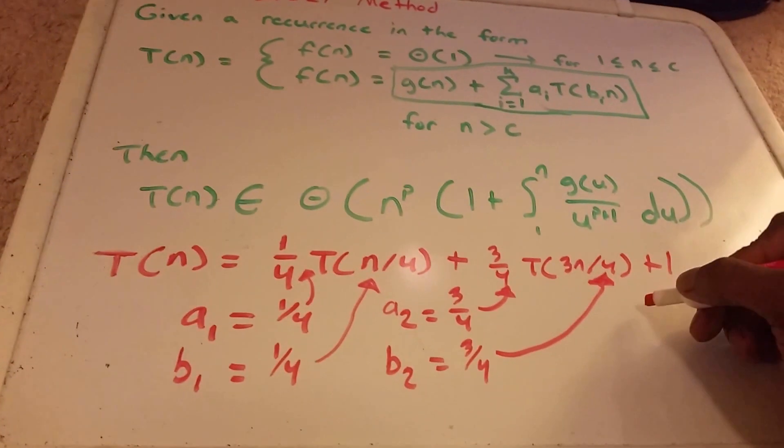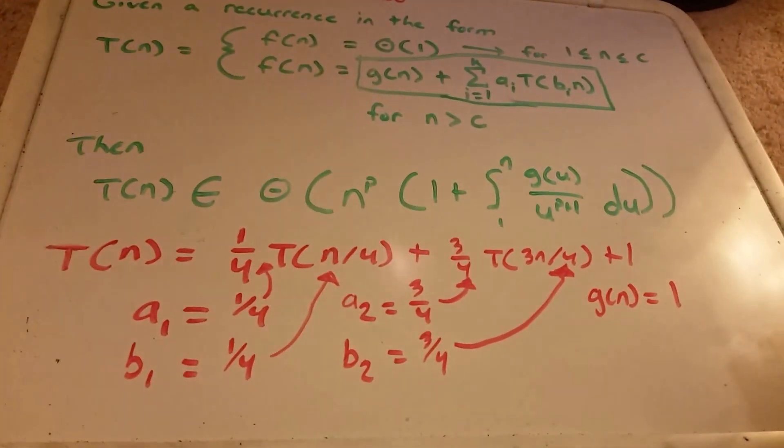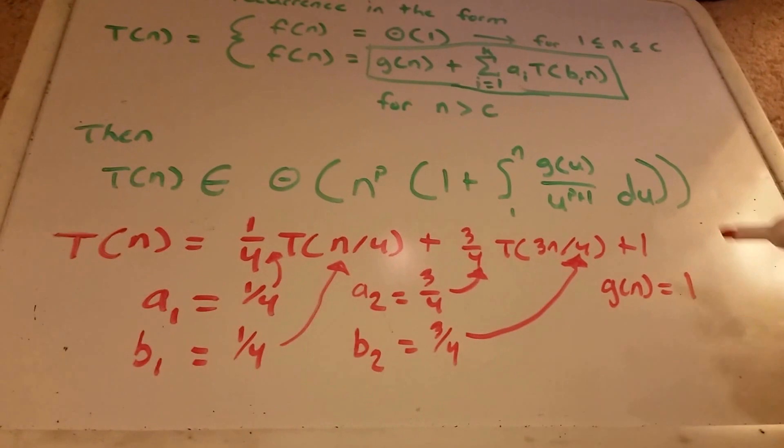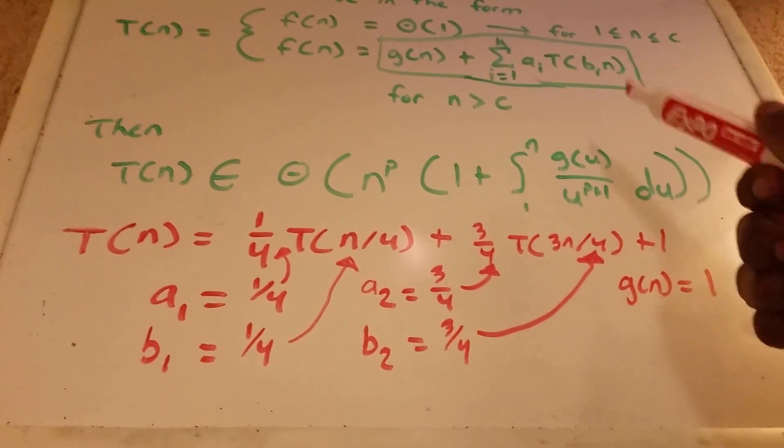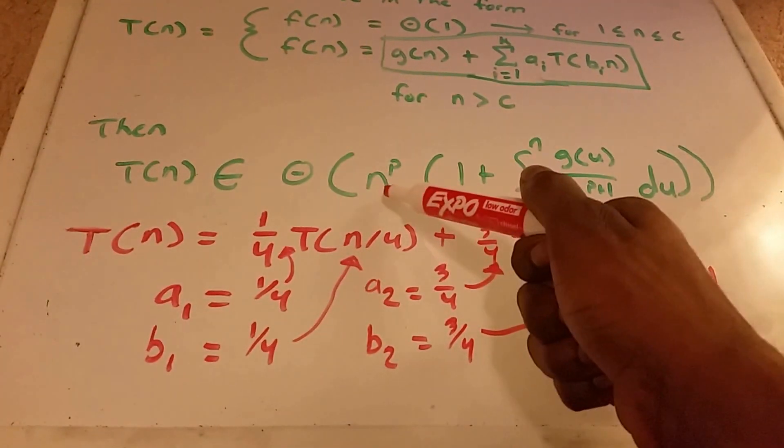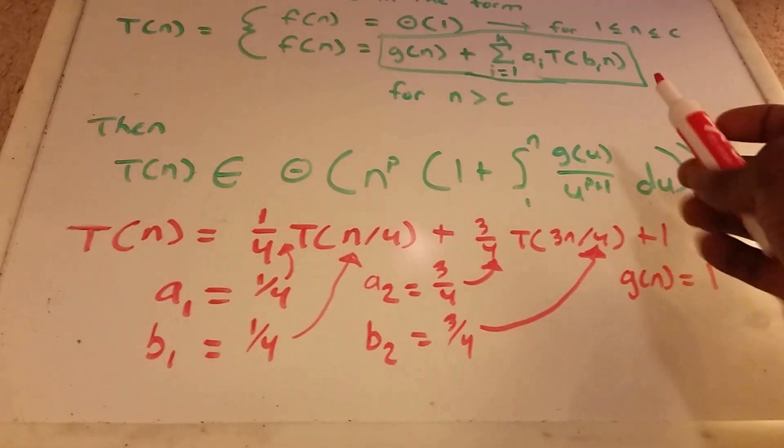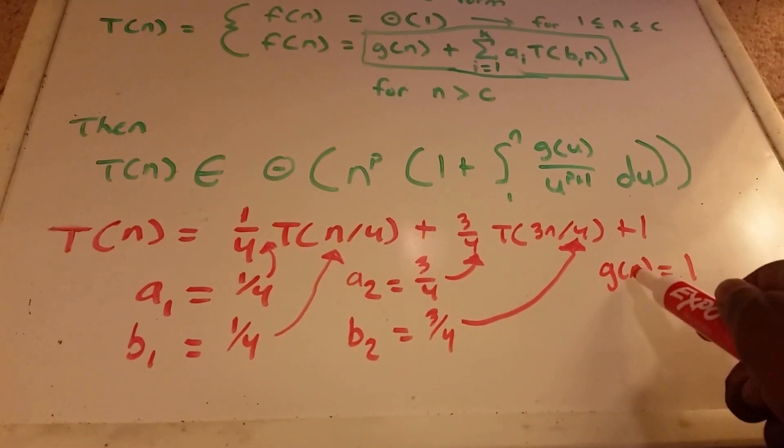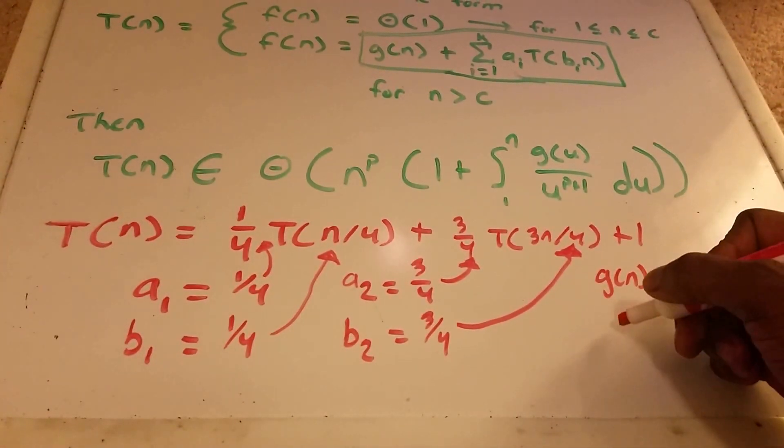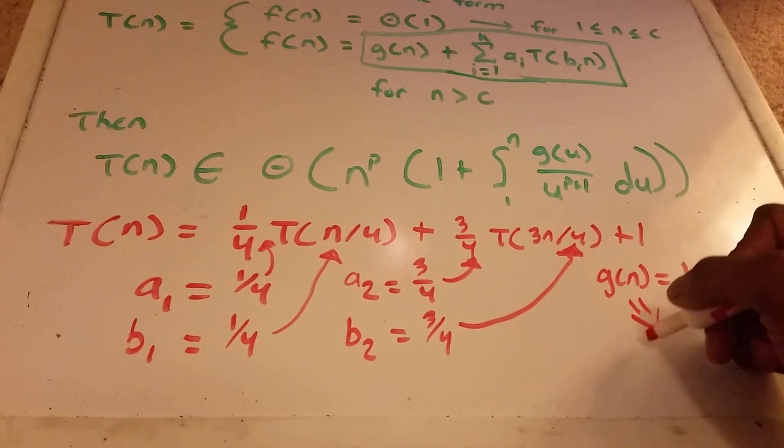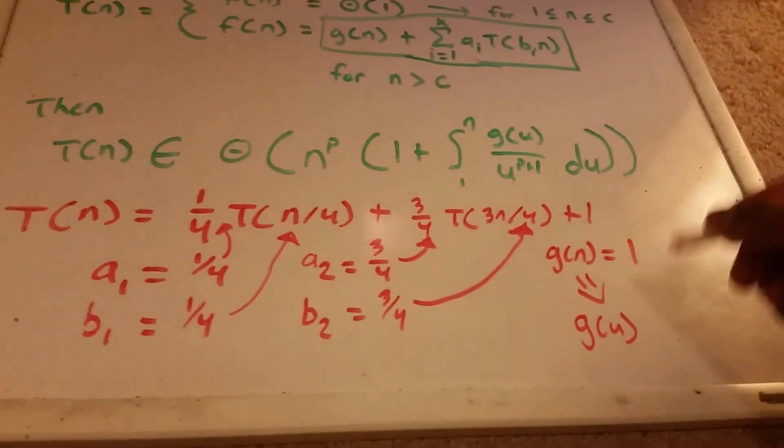Okay? And now our g of n is equal to 1. So in this equation here we don't have any values of n except for here. And it's a different n. It's not the same one. So we want to make this a function of u. And so we could just simply change this to g of u. So this is our g of u which equals 1.